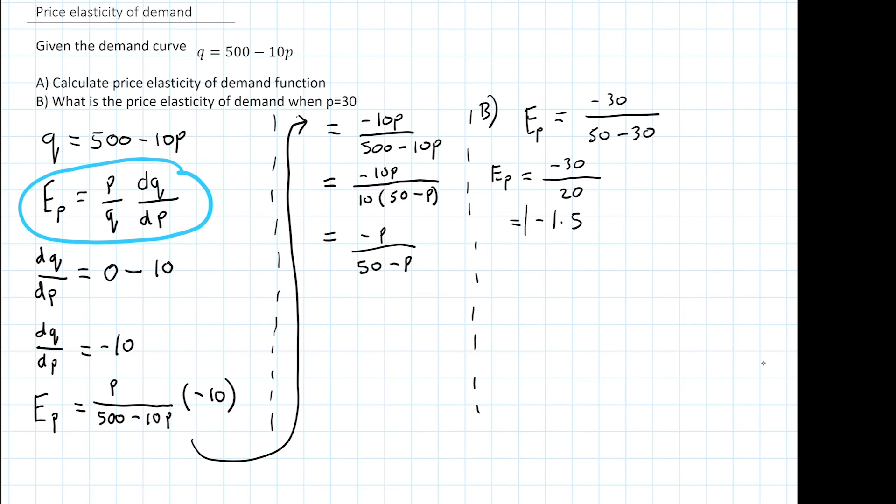Now generally we put the absolute value over the top of this just because that satisfies the law of demand: as prices rise, the quantity demanded falls.